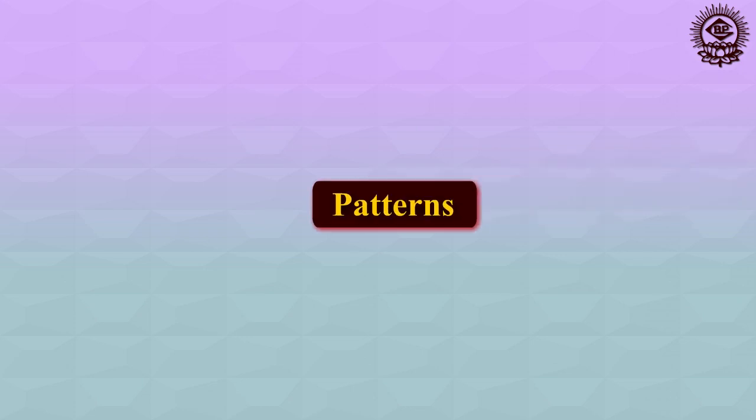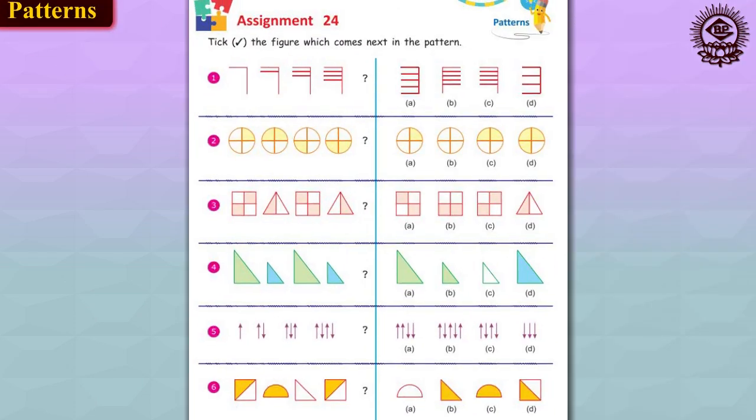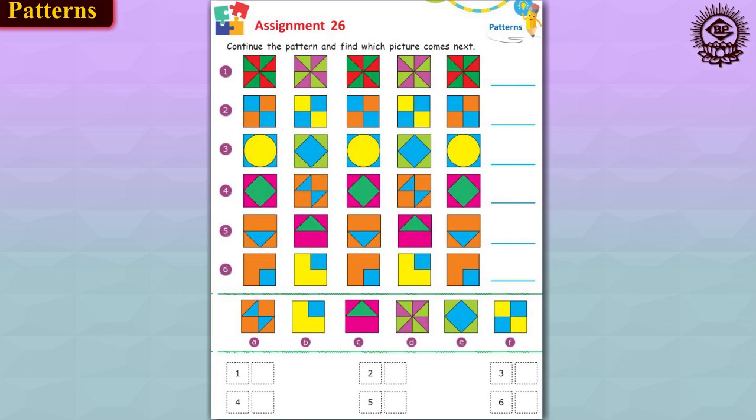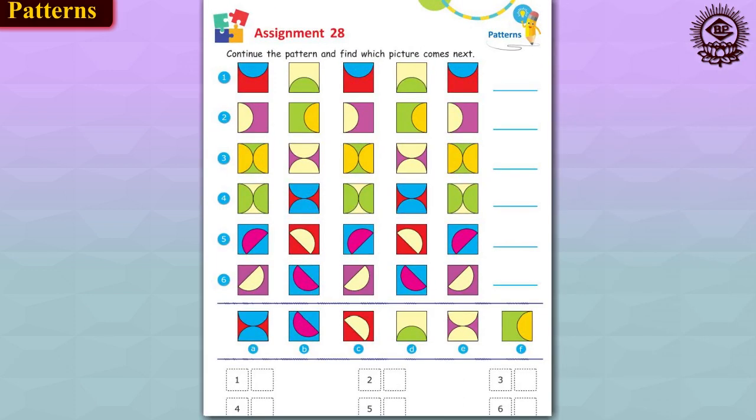Children love to find patterns in the world around them. Patterns help children understand change and that things happen over time. Patterns help children make predictions because they begin to understand what comes next. They also help children learn how to make logical connections and use reasoning skills. Patterns can be found everywhere in our daily lives and should be pointed out to small children.